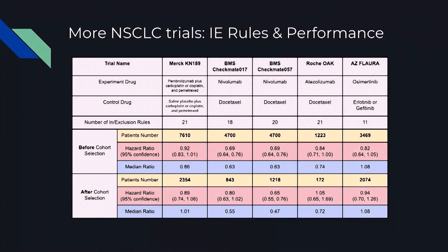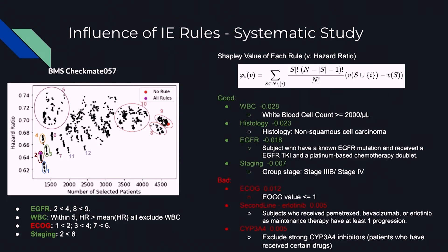In practice, you can discard all the bad ones, because for the bad ones they lower your treatment effect — they make your hazard ratio larger and also include fewer patients. Whether to include the green ones depends on your evaluation. If you want as many patients as possible, you can discard them since their contribution is not so significant. But if you really want the best hazard ratio, you can include all the green ones. So from this one BMS clinical trial example, the short conclusion is that most criteria are not so necessary — we do not really need them, and they result in much smaller patient numbers while the hazard ratio does not improve much.